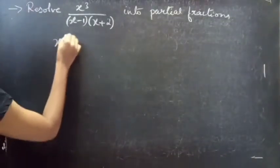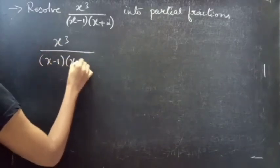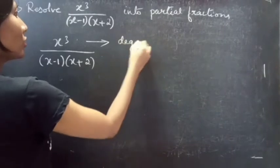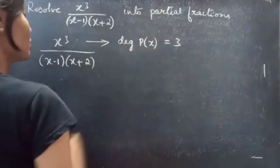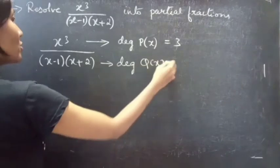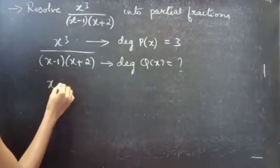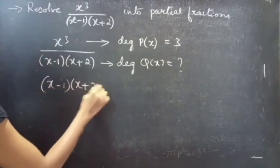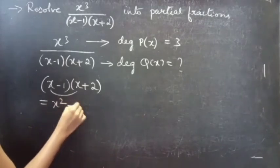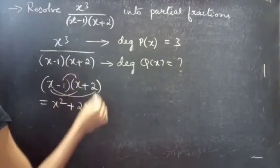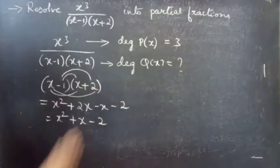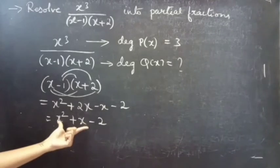We are given the fraction x cubed by (x minus 1) into (x plus 2). The degree of p(x) is 3. The degree of q(x): if we expand (x minus 1)(x plus 2) we get x squared plus x minus 2, so the degree of q(x) is 2.